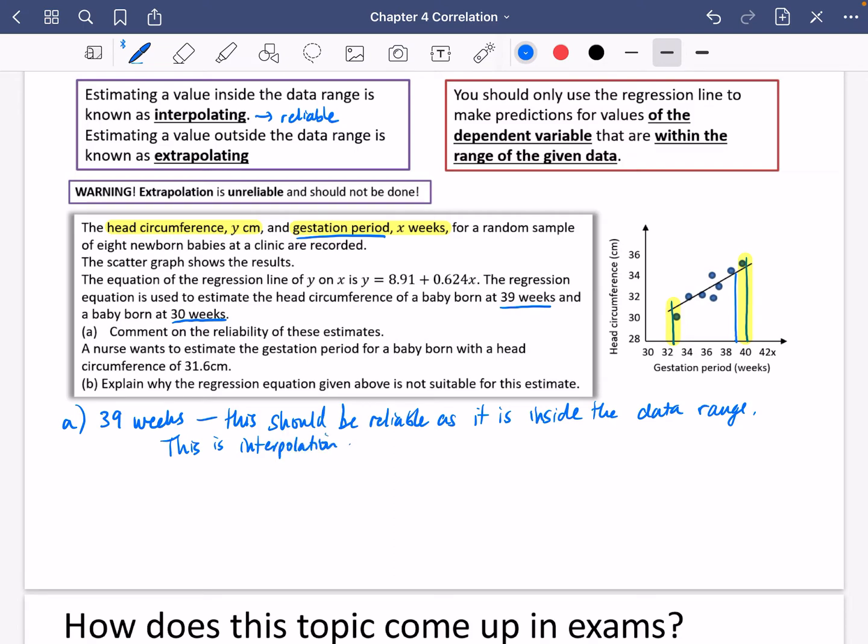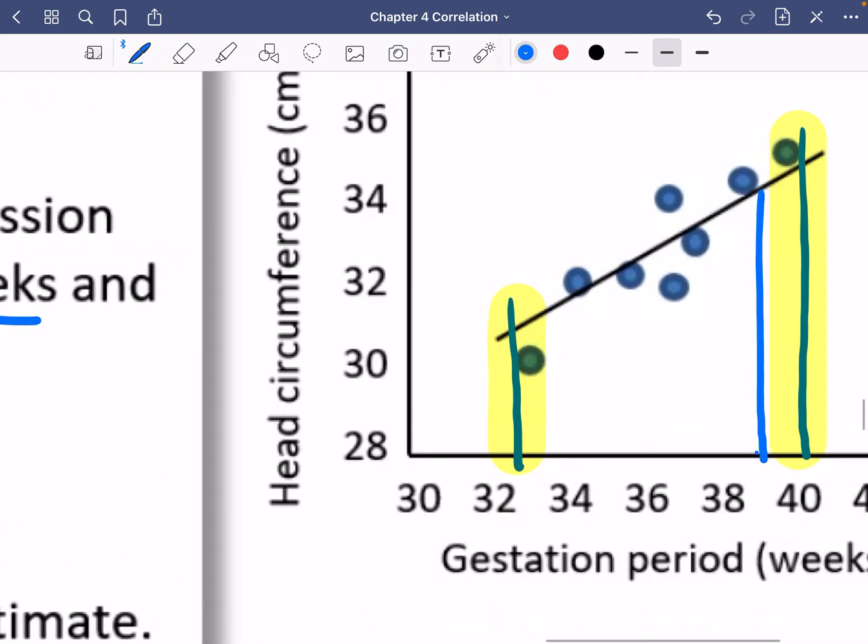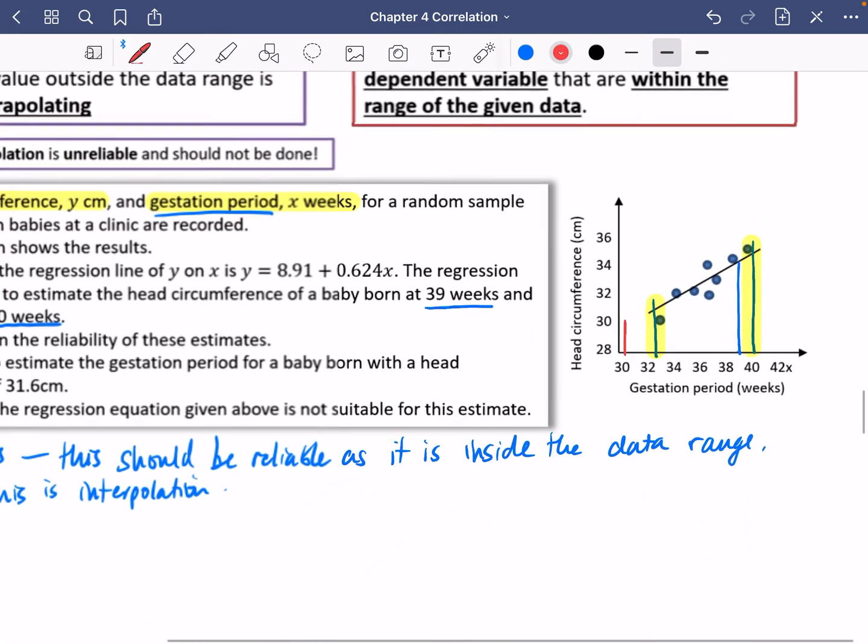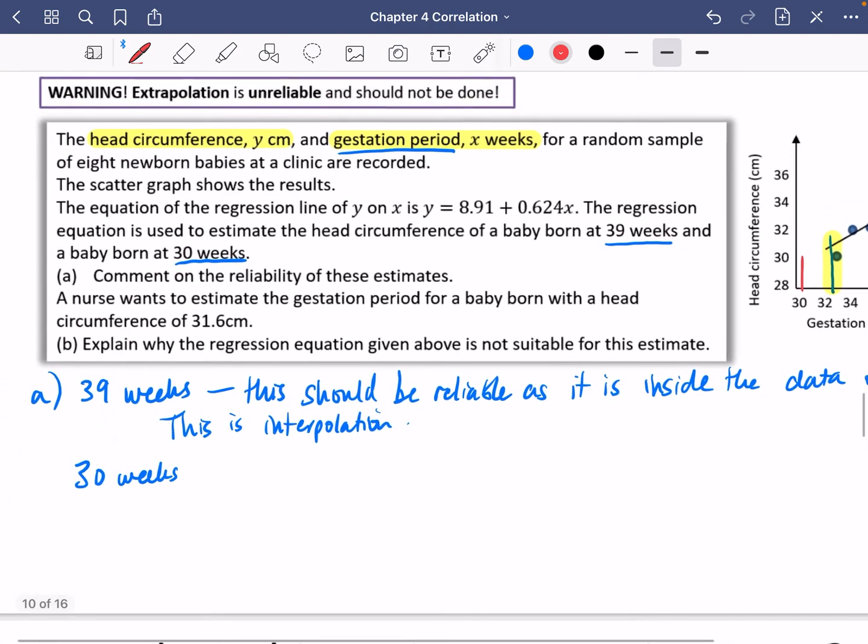And then we're going to have a look at the 30 weeks. Well, if we go back here, if we go to the 30 weeks, 30 weeks is over here and it is outside the data range. So it is not going to be reliable and it should not be done.